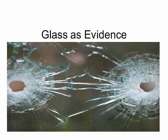First of all, we have to know about the types of glass. There are various types of glass used in the manufacturing of different products, like float glass, soda lime glass, borosilicate glass, laminated glass, tempered glass, etc.